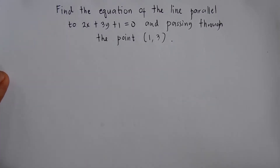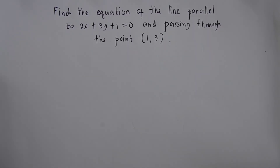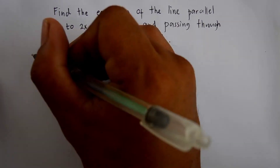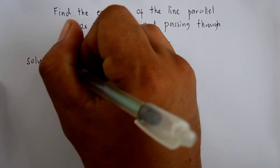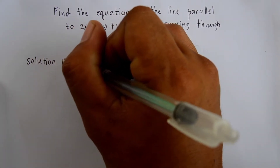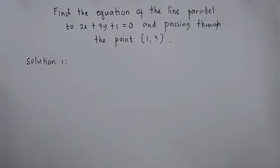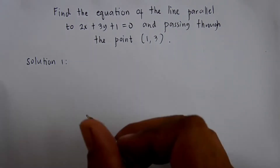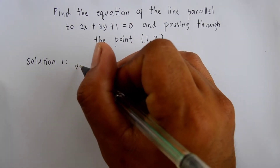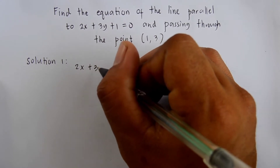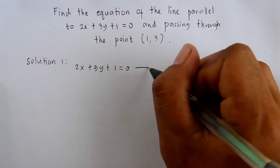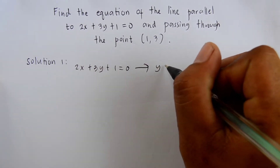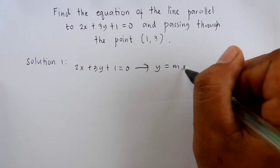We find the equation of the line parallel to 2x plus 3y plus 1 equals 0 and passing through the point (1, 3). So we have our solution number 1. We copy the equation: 2x plus 3y plus 1 equals 0. We are going to make this in the form y equals mx plus b.